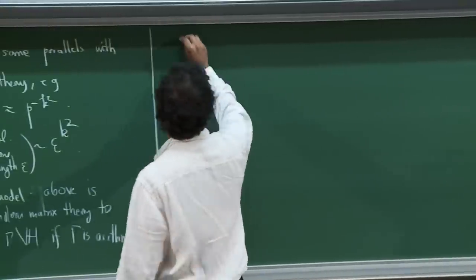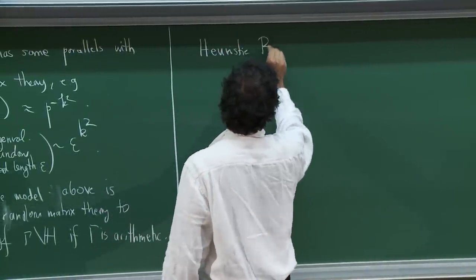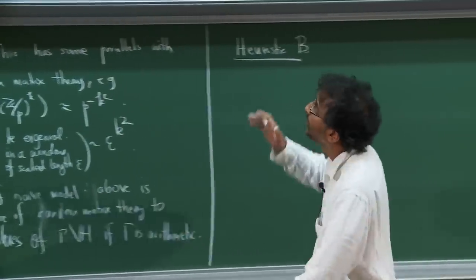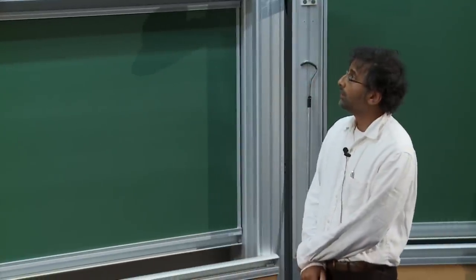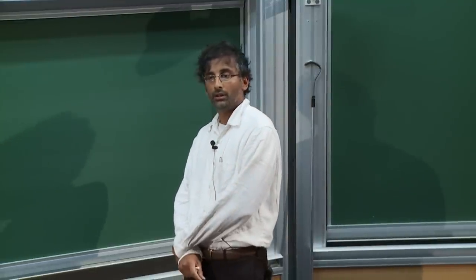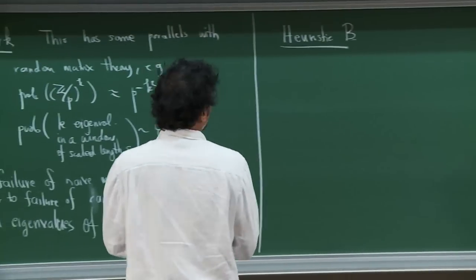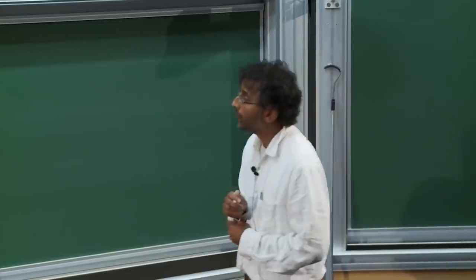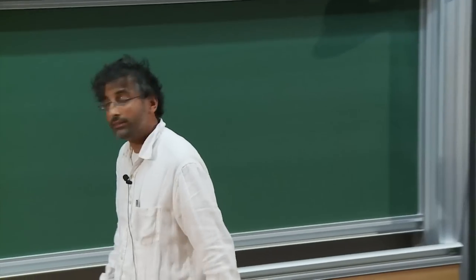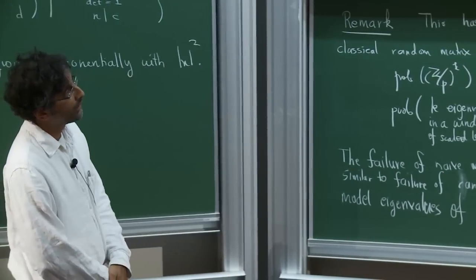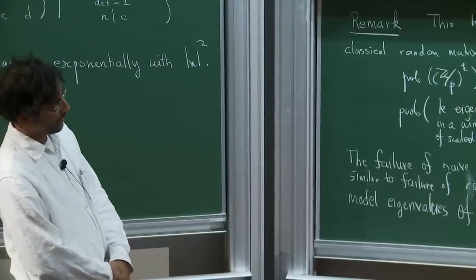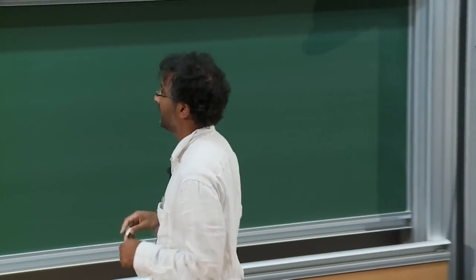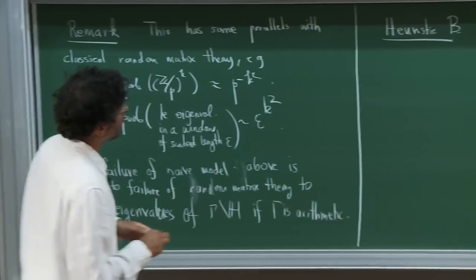That's the end of the first heuristic. Now I want to talk about the second heuristic, which is much more specialized, but gives me a chance to talk about some of the reasons one might be interested in this story in the first place. For heuristic B, I have to describe a little bit the relation of this to the Langlands story. Let me start by saying something which happens in the classical case over Q.